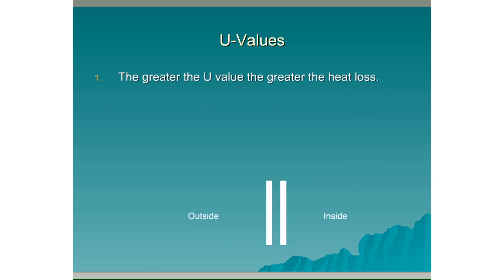The greater the U value, the greater the heat loss. Here we have an example of a standard cavity wall with an internal leaf and an external leaf. There's no insulation in the cavity, so the U value is quite high — let's say 5. Heat is generated inside the building, and because the U value is high and there's no insulation, the heat passes through the wall fairly quickly. However, if we introduce some insulation into the cavity, this can lower the U value — let's say to 1. Because the U value is lower, less heat passes through the wall.